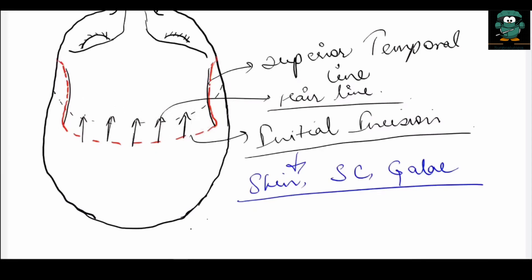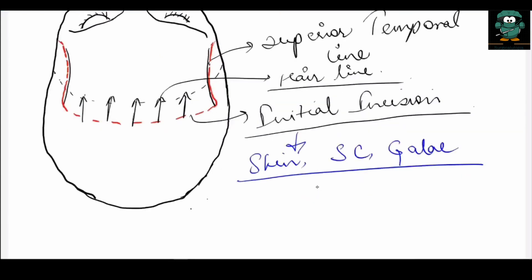As the flap is dissected in the anterior region, tension will develop on the lateral side because the lateral side of the flap is still attached to the temporalis fascia. This tension develops because the flap is still attached to the temporalis muscle on the lateral side. Therefore, dissection is also done below the superior temporal line on the lateral aspect so the flap can be dissected more anteriorly.